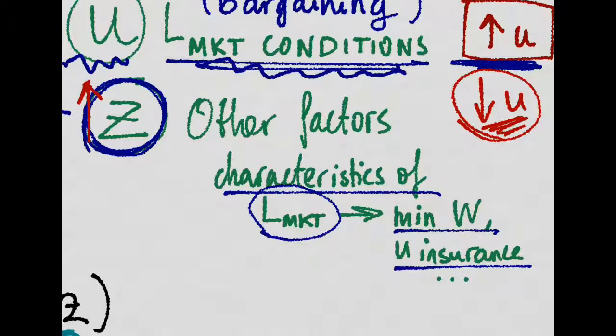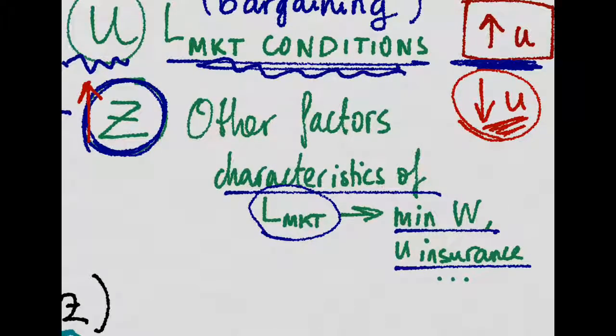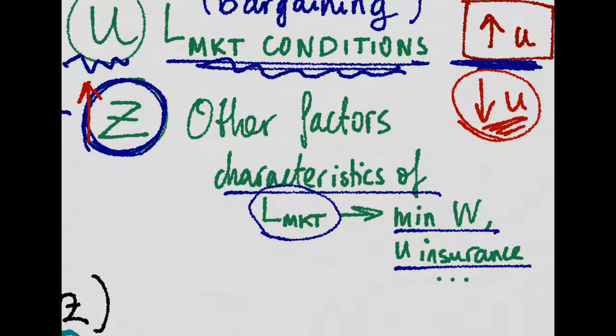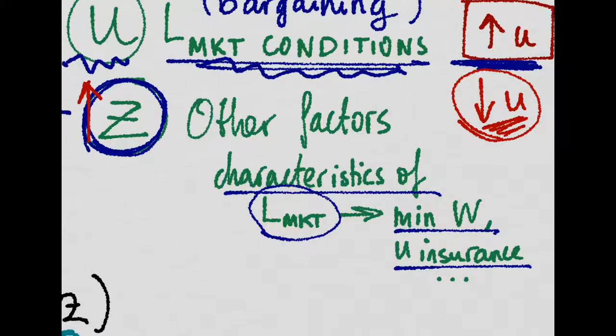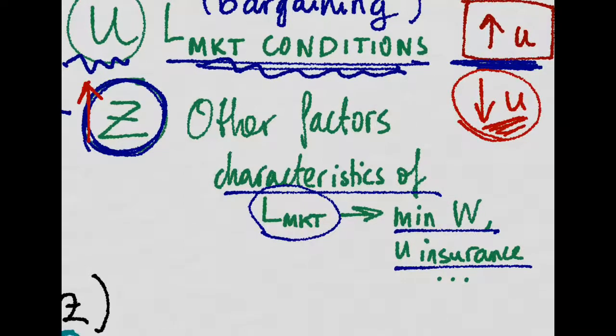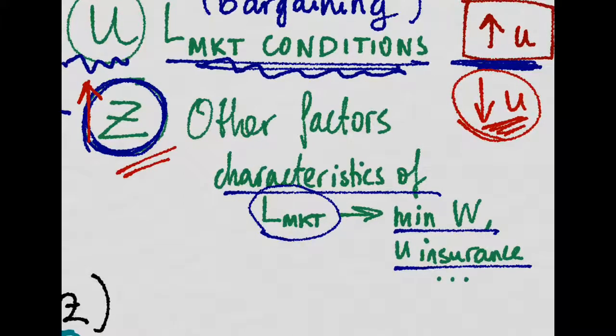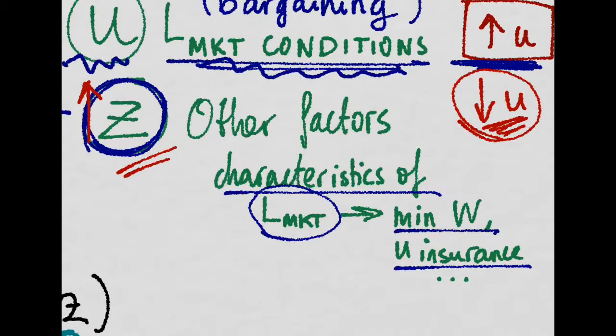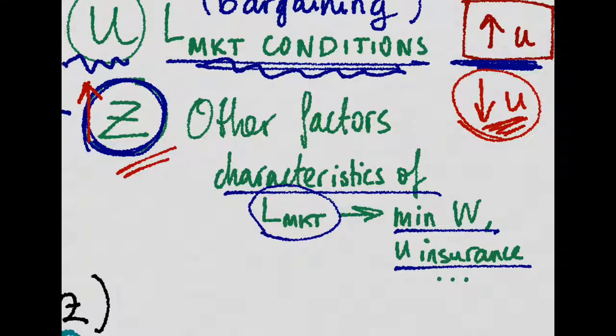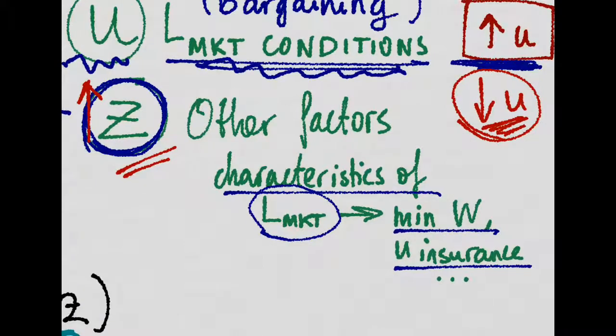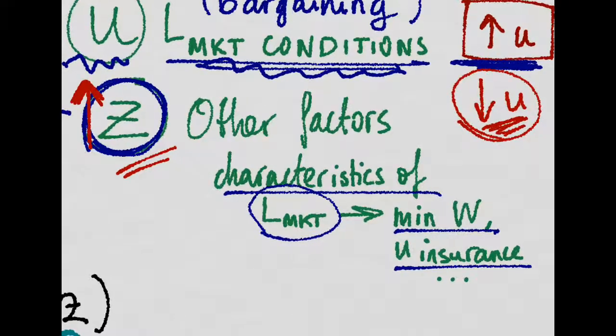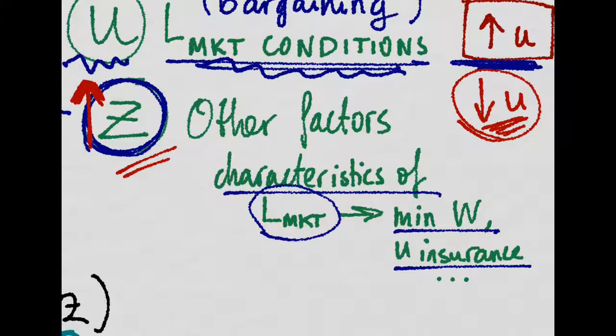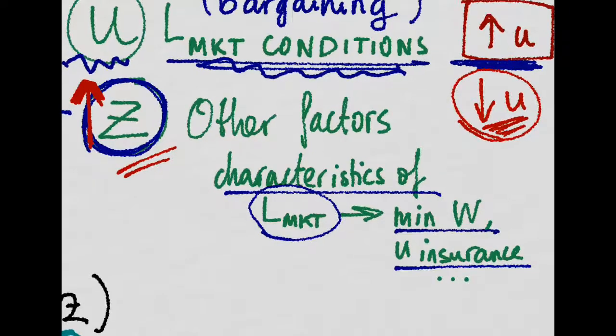Now, there are other factors that affect wages, which are basically the characteristics of the labor market, which could be described as a catch-all variable called Z. And these are the minimum wage, unemployment insurance, etc. You can think of it this way: whenever protection in the labor market is high, people have a higher bargaining power and they get higher wages.